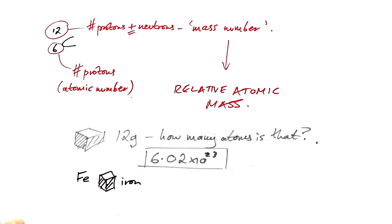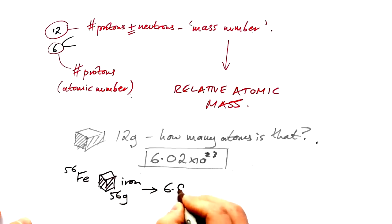Now iron, it turns out, usually has 56 neutrons and protons in its nucleus. Its mass number is 56. When they got a block of iron that was 56 grams, how many atoms did they find that was? Lo and behold, it was exactly the same.